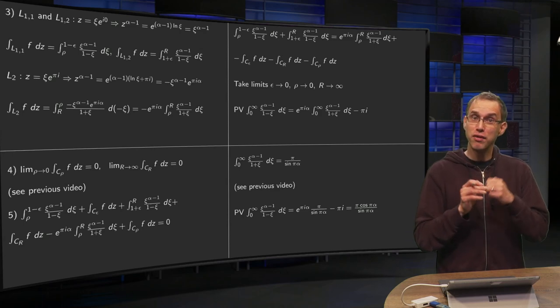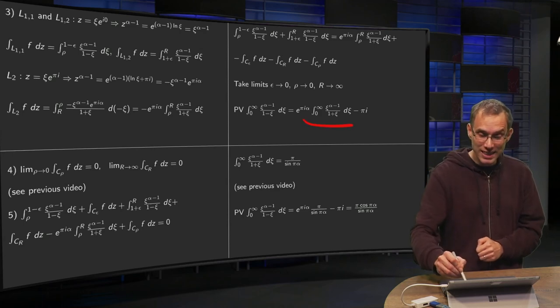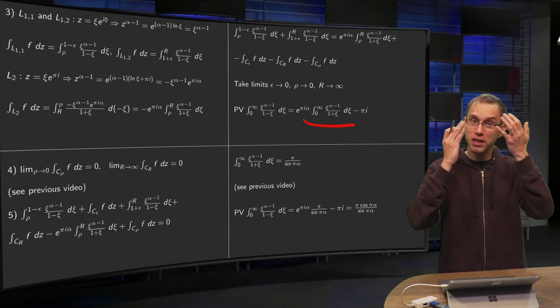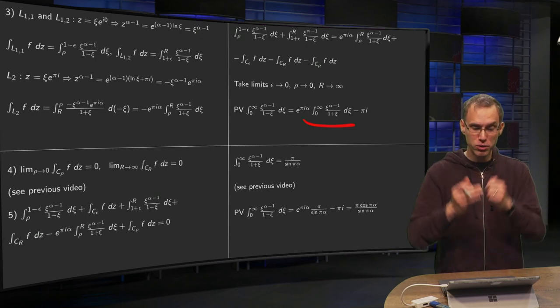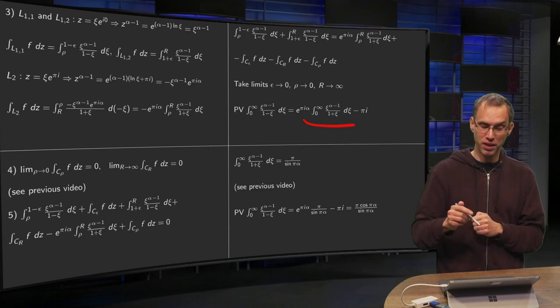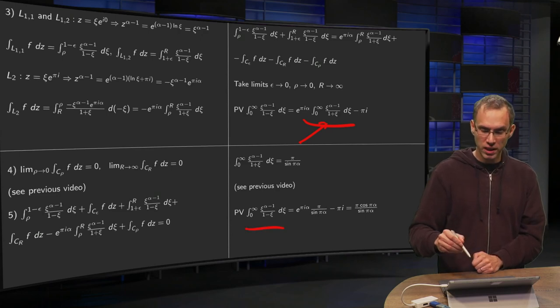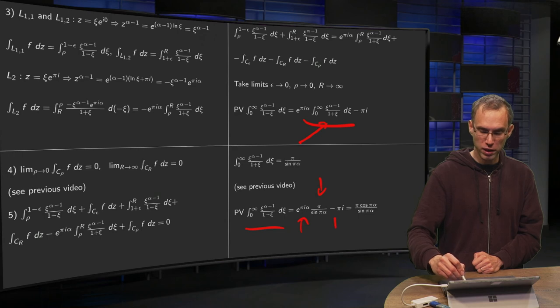Hey, but that's fortunate. In the previous video, we exactly did this integral. It's equal to pi over sin pi alpha. So we can use the result of the previous video to compute the integral of this video. Just plug pi over sin pi alpha in over here. Then the integral you want equals pi over sin pi alpha times e to the power i pi alpha minus pi i.